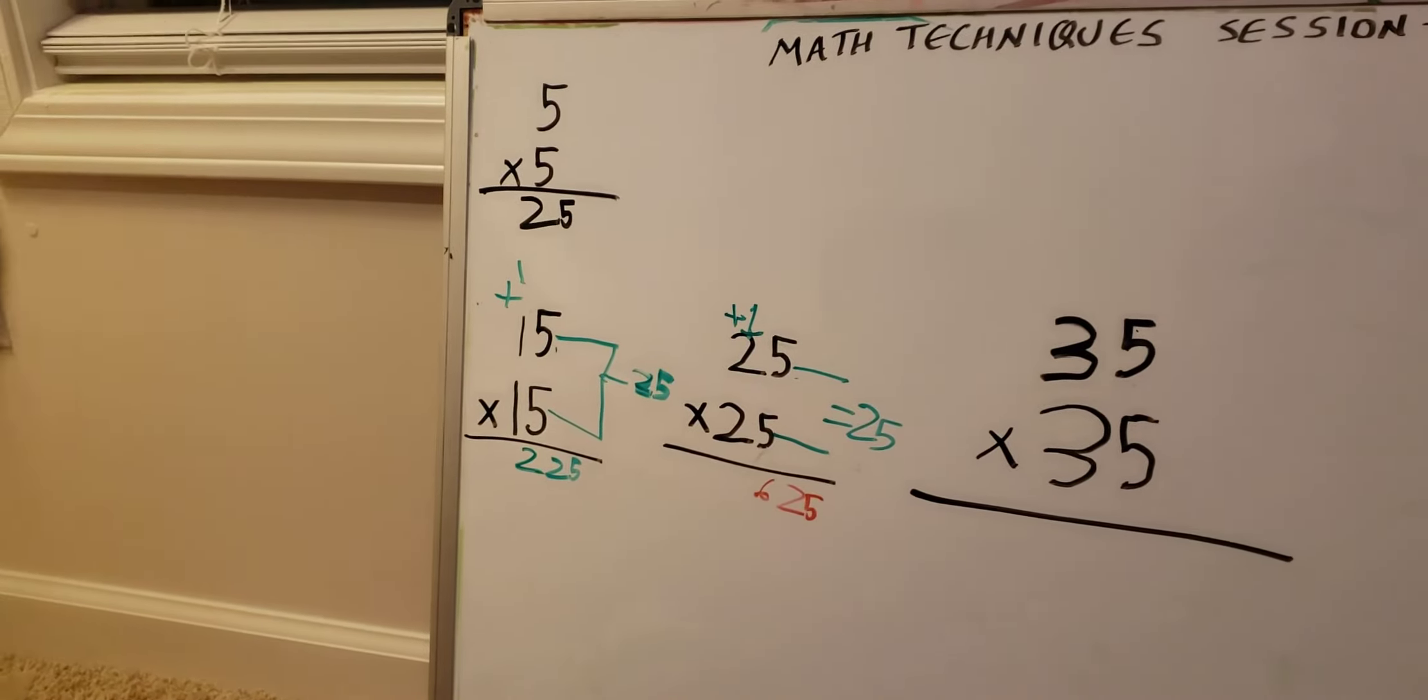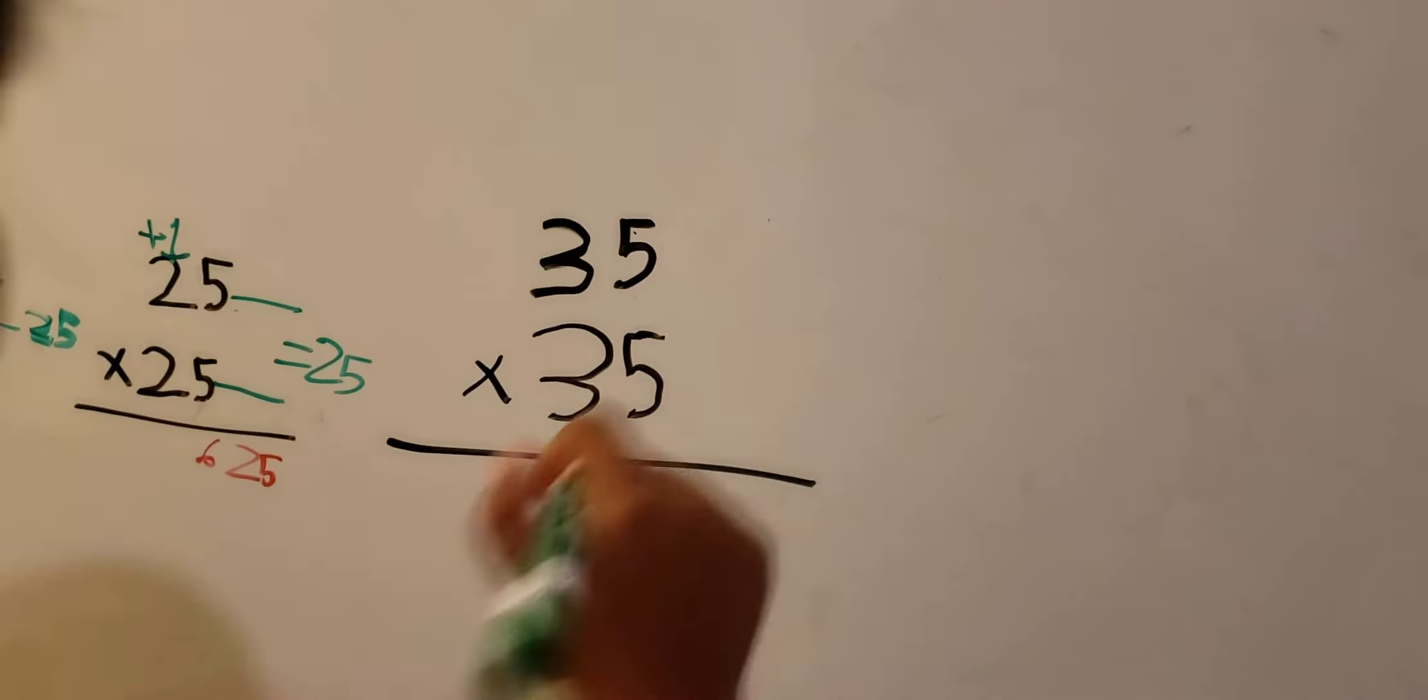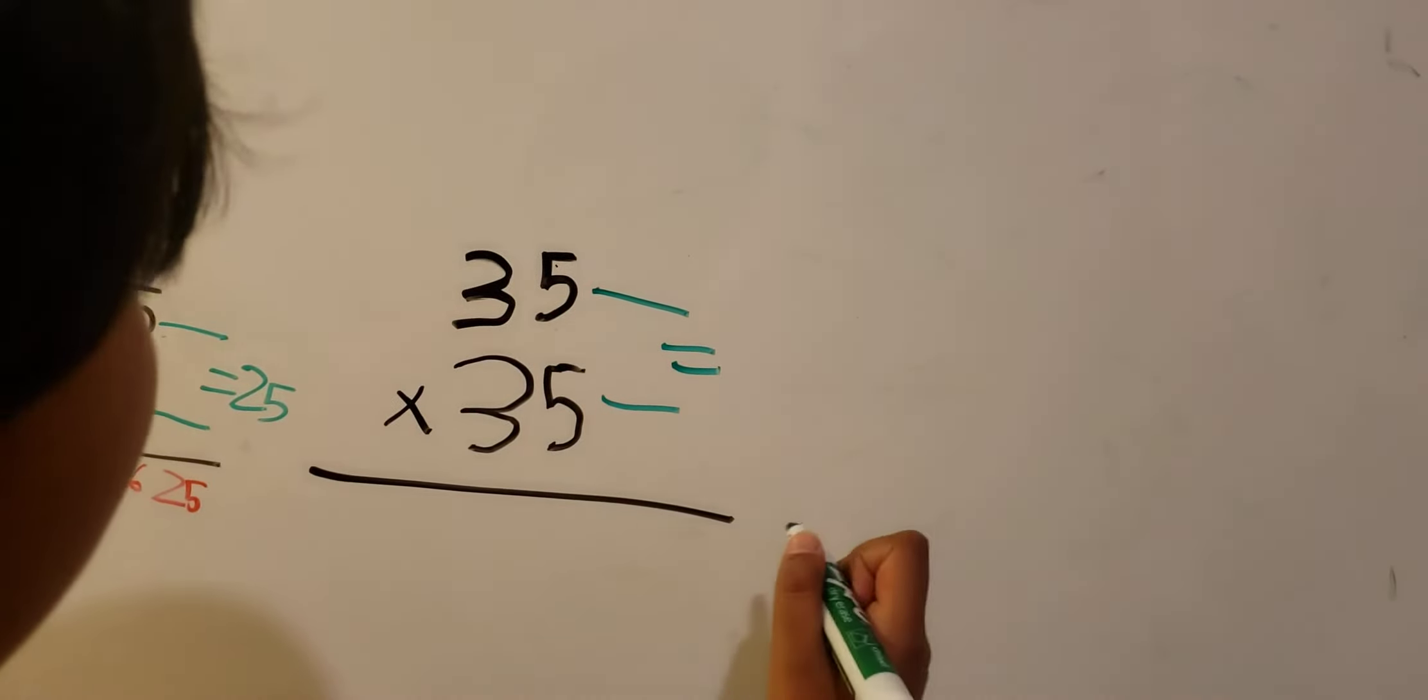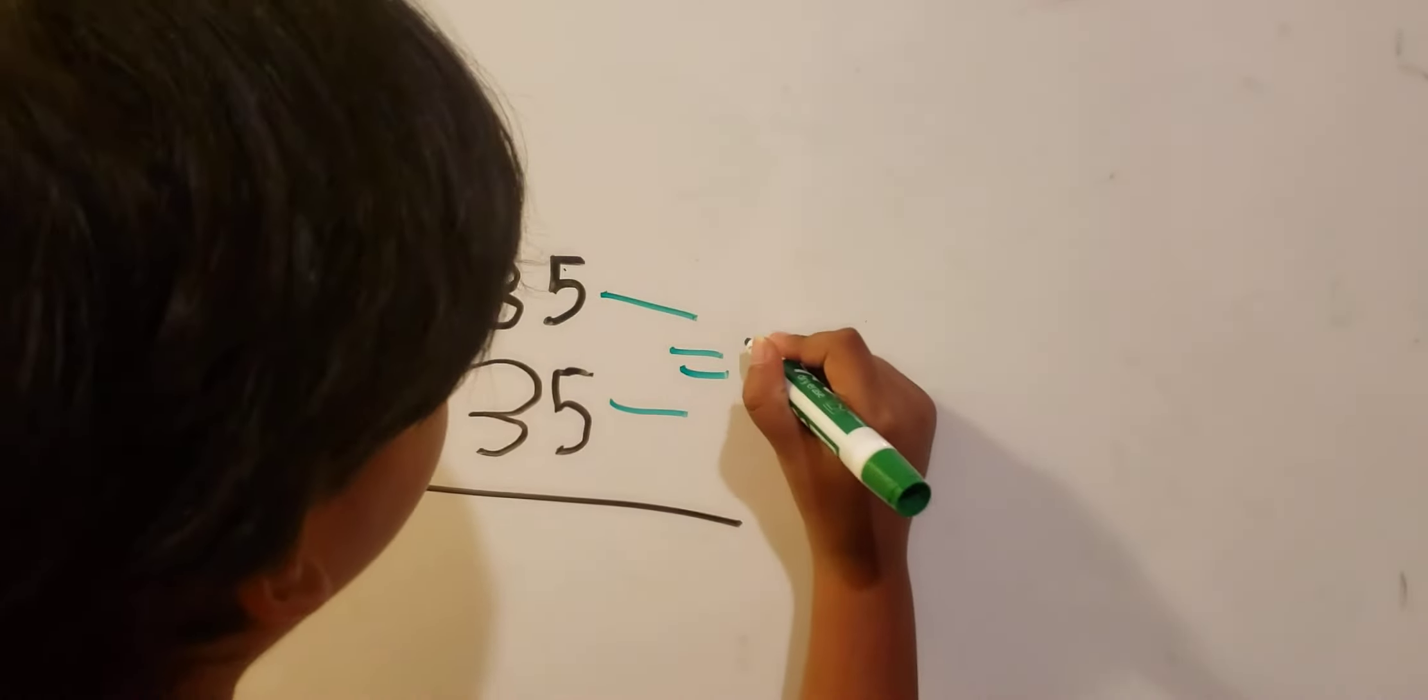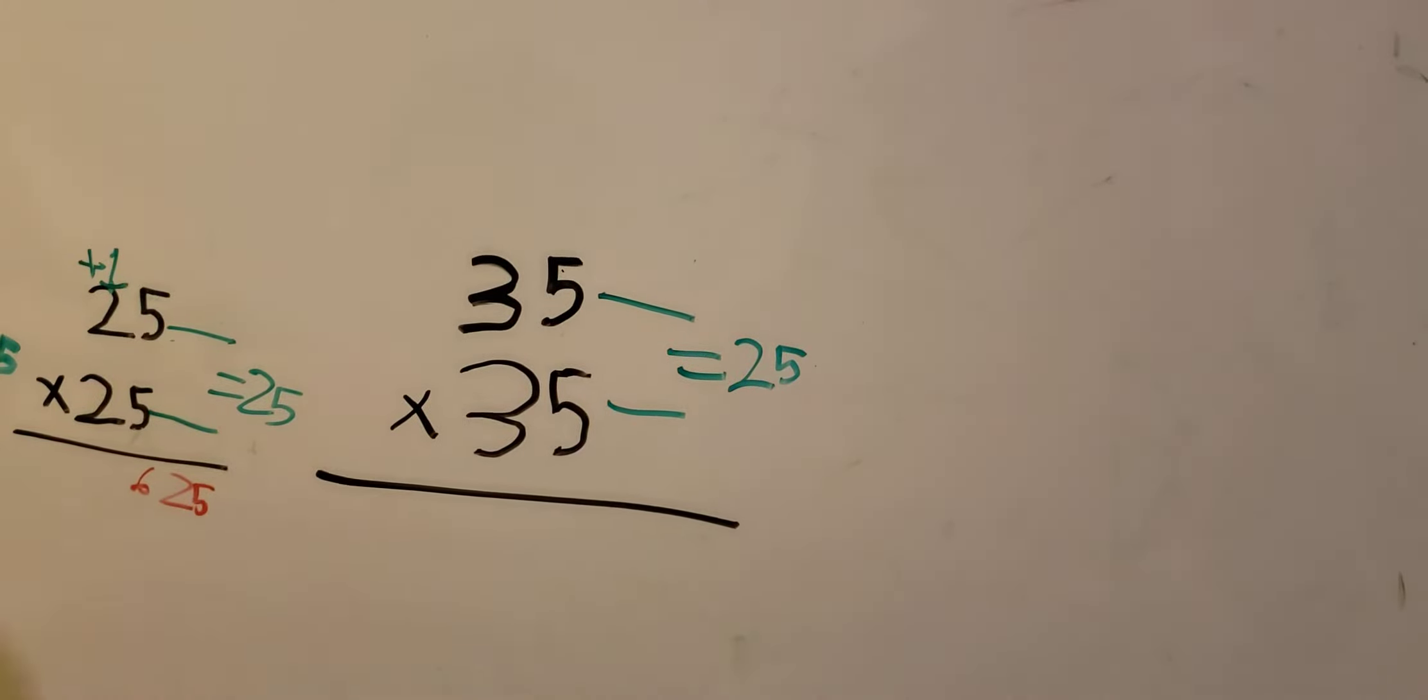To multiply 35 times 35, same thing, just need to multiply 5 times 5 to make 25, put 25 in the back.